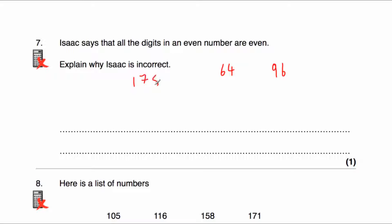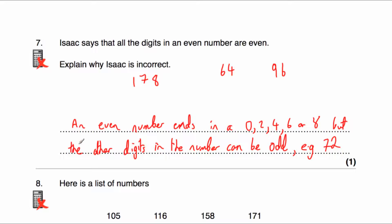For instance, 178 — that has an odd number in the hundreds, an odd number in the tens, but it has an even number at the end, so 8 is even. So that number is even, but not all the digits are even. An even number ends in a 0, 2, 4, 6, or 8, but the other digits in the number can be odd — for example, 72. It has an even number at the end (the 2), but the other digit, the 7, can be odd. So Isaac is incorrect.